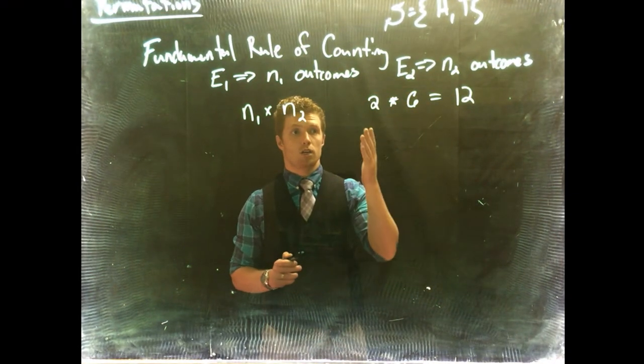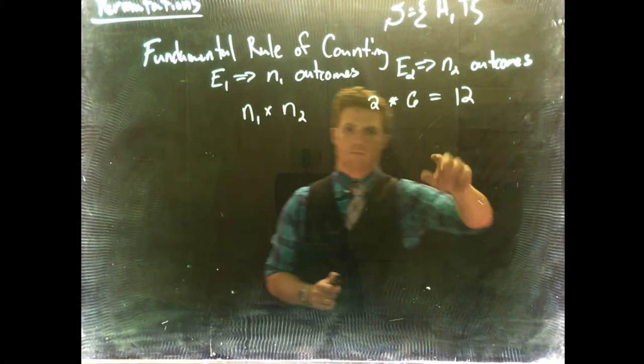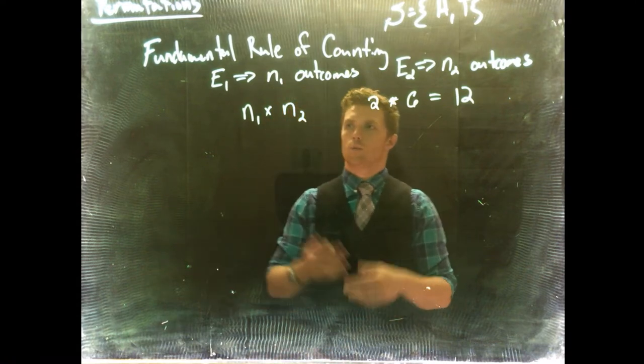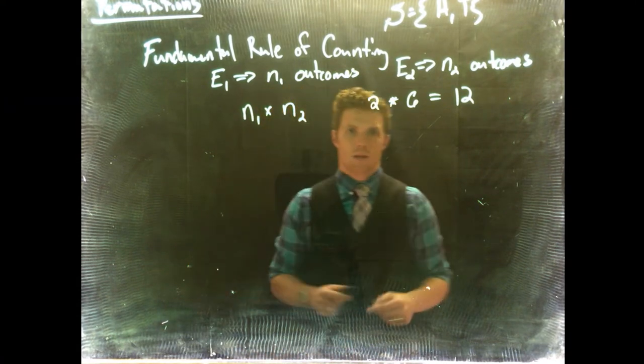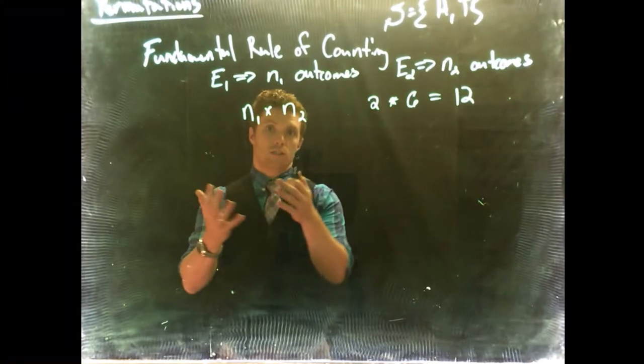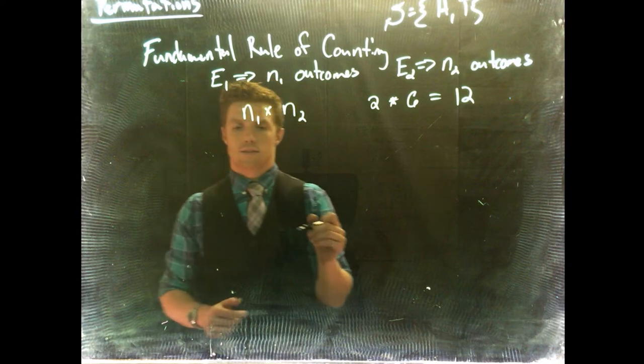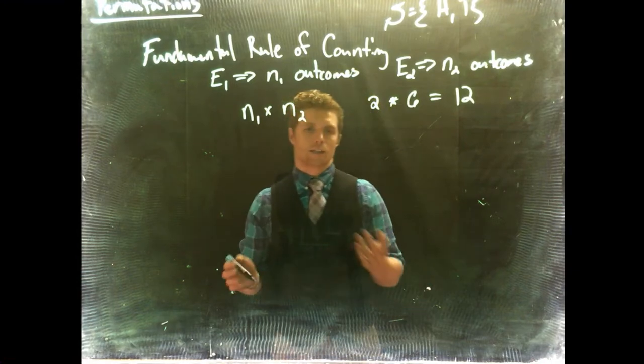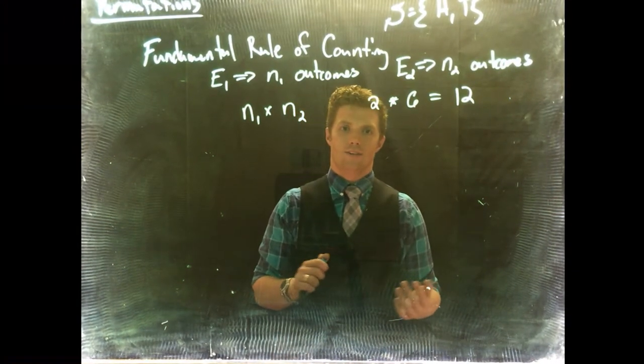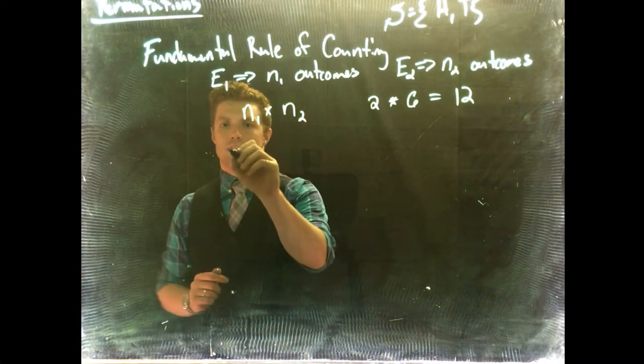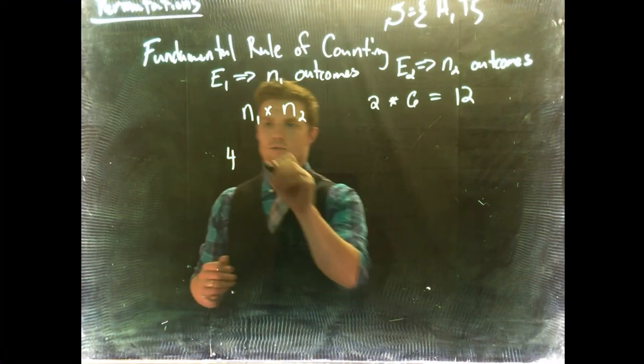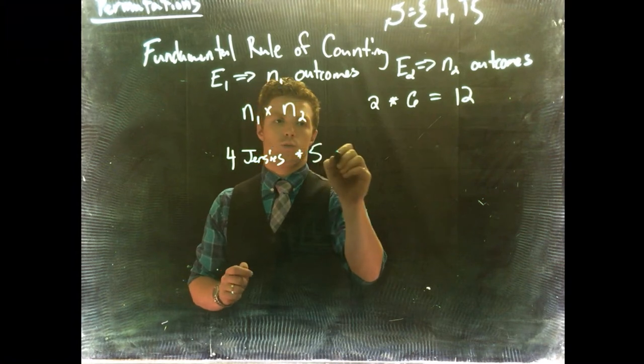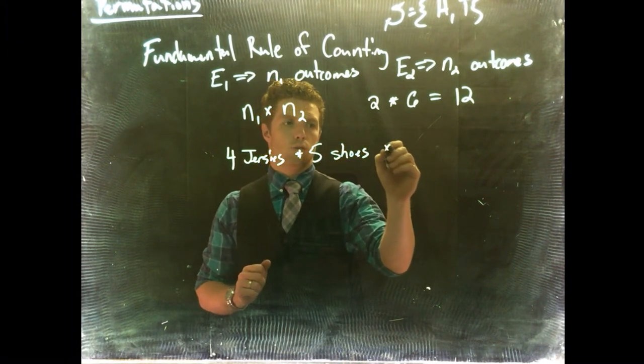And we could say that we now have 12 for our sample space for flipping a coin and rolling a dice. We can do this for much more complicated examples. Now, let's do an example. Let's talk about Jersey possibilities. Like the Oregon Ducks, they've got a ridiculous number of Jersey combinations because they have like, total uniforms. They've got four jerseys, multiplied by five shoes, and we'll do three helmets.